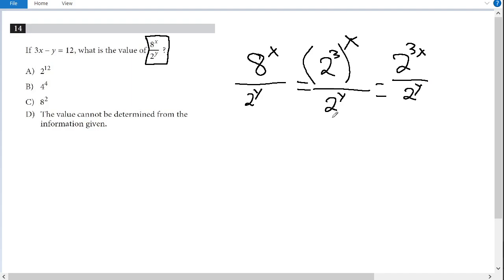And now I use my combining exponent rule. I know that if I'm dividing exponents that have the same base, that is the same thing as simply subtracting the bottom exponent from the top exponent. So this is equivalent to 2 to the 3x minus y.